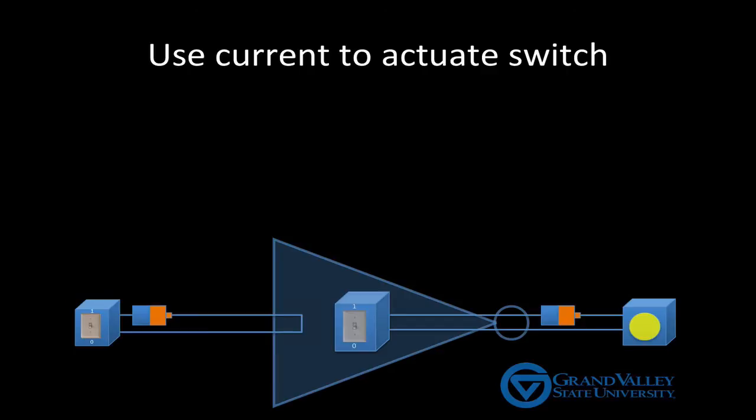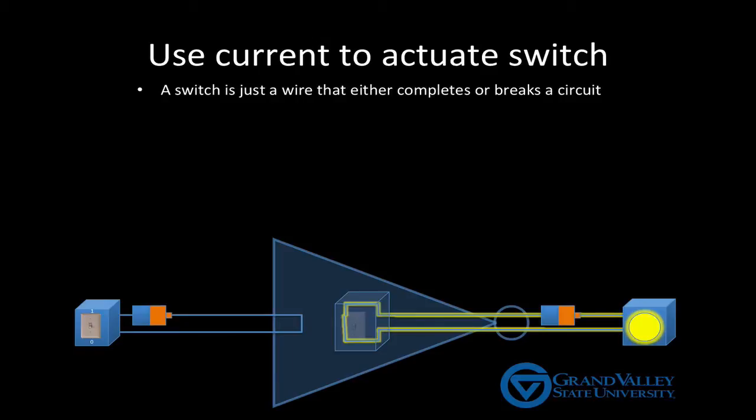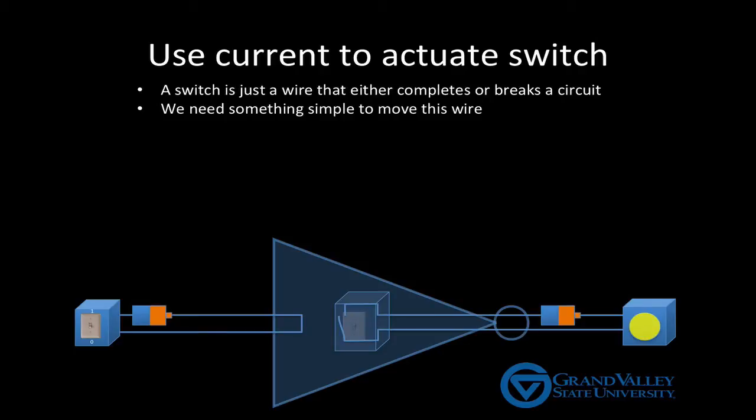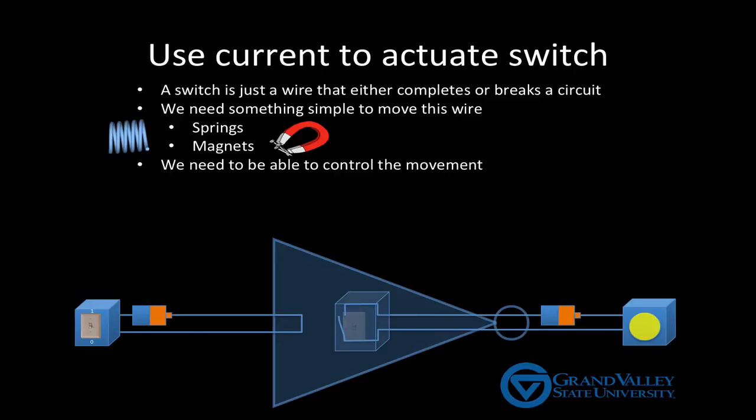The key is to think about the switch. A switch is simply a piece of wire that can move to either complete a circuit, allowing current to flow, or break a circuit, preventing the flow of current. We need a simple mechanism of moving this wire, such as a spring or a magnet, both of which are basic tools commonly found around the house, especially in old broken toys. The challenge is that we need to be able to control the spring or magnet. Springs always pull and don't really give us a lot of control, but what about the magnet? How can we control a magnet?